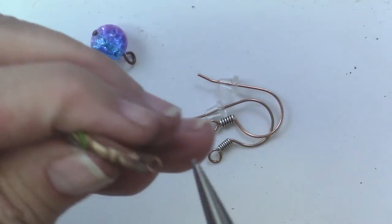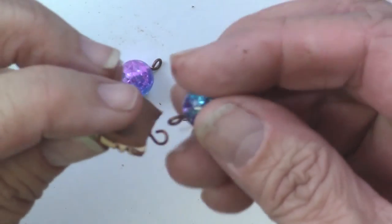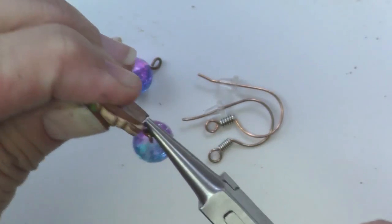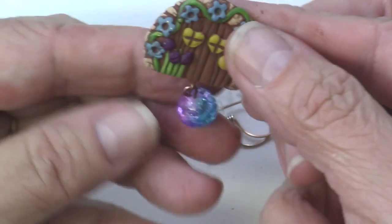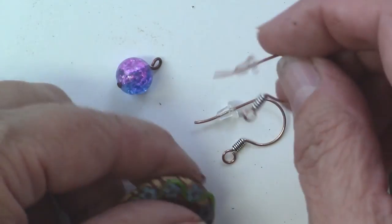Once I have my loops formed, I'm ready to start assembling these earrings. I'll place the dangle. You could use anything for this dangle, any color beads, or you could make polymer clay beads even. That would be really cute. These happen to complement the door really well.